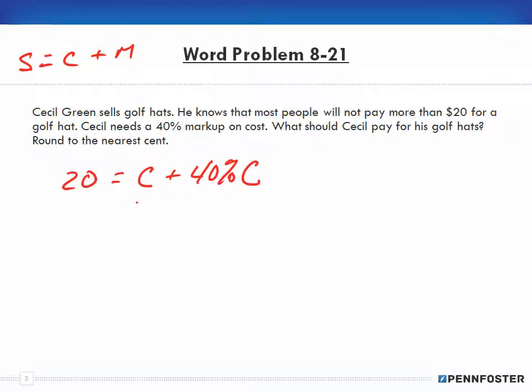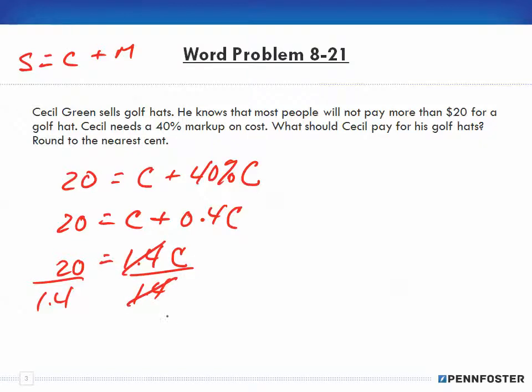We just basically need to do the math here. So this is $20 is equal to C plus 0.4C. So 1 plus 0.4, that's 20 is equal to 1.4C. And then we divide both sides by 1.4 to isolate the C. They cancel. So we have 20 divided by 1.4, which is equal to C. And that is equal to $14.29.